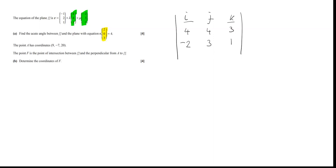The easiest way to do that is to set up a 3x3 matrix and take the determinant, where you put i, j, k at the top row, the first vector in the middle row, and the second vector in the bottom row. So it's i times (4×1 − 3×3), minus j times (4×1 − 3×(−2)), plus k times (4×3 − 4×(−2)).